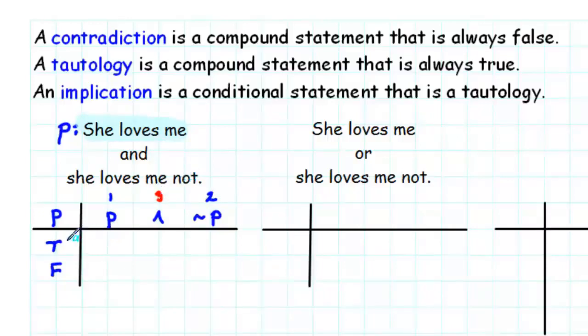For P, we just copy the truth values true and false. For not P, we find the negation of true and false. The negation of true is false, and the negation of false is true.